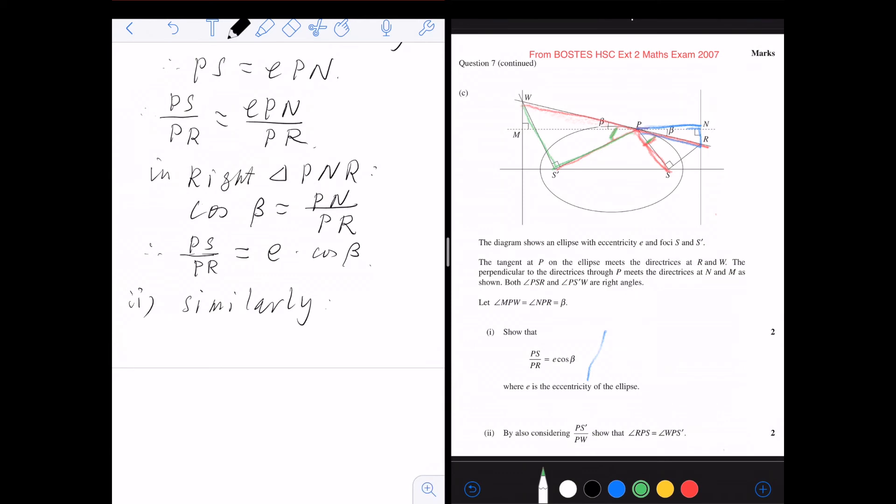So we can use similar ideas. PS dash over PW will be equal to e PM over PW, which also equals e cos beta.